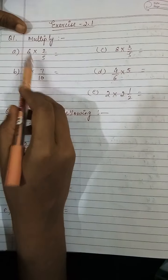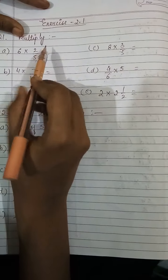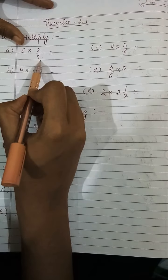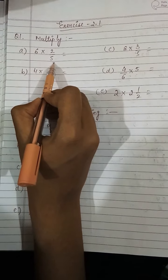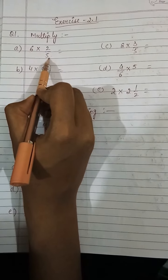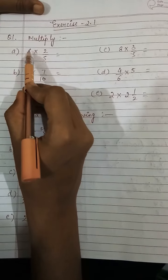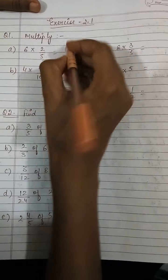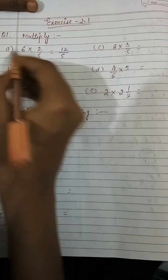See the first part: 6/5 × 2/5. Nothing is getting cancelled. We have to multiply and the numerator will be cancelled with the denominator, but I can see that 6 and 5 do not have any common factor, and 2 and 5 do not have any common factor. So the numerator will be multiplied with the numerator: 6 × 2 = 12, and the denominator will remain 5.